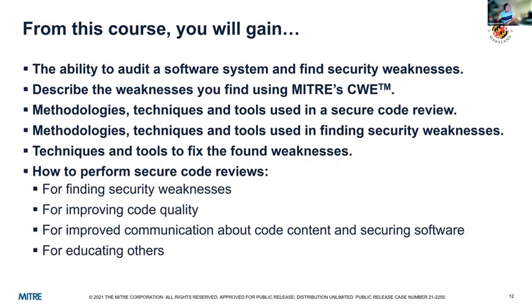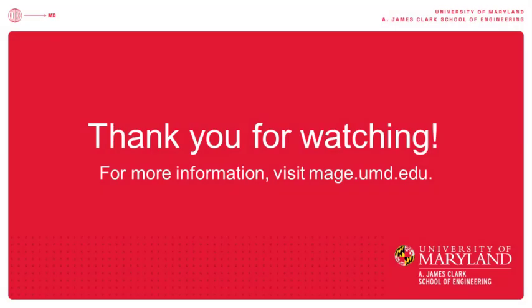From this course, what will you gain? You'll gain the ability to audit a software system and find security weaknesses. You'll learn how to describe the weaknesses using MITRE's Common Weakness Enumeration, or CWE, methodologies, techniques, and tools used for finding security weaknesses and performing a secure code review. We'll also look at techniques and tools to do analysis, find weaknesses, and fix them — including how to perform secure code reviews for improving code quality, communication, and educating others.